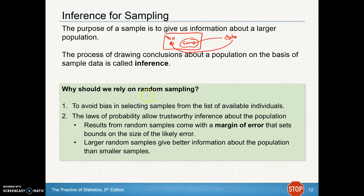Why should we rely on random sampling? First, it helps avoid bias in selecting samples from the list of available individuals. Second, the laws of probability allow trustworthy inference about the population — in other words, it keeps the individual sampler from influencing or conveniently choosing different data.